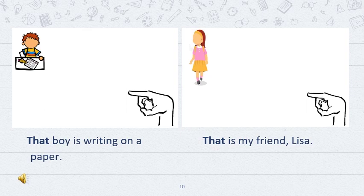That boy is writing on a paper. Let's look at another example. That is my friend, Lisa. And as you can see, Lisa is really far from that pointed arrow. That's why we use 'that'.